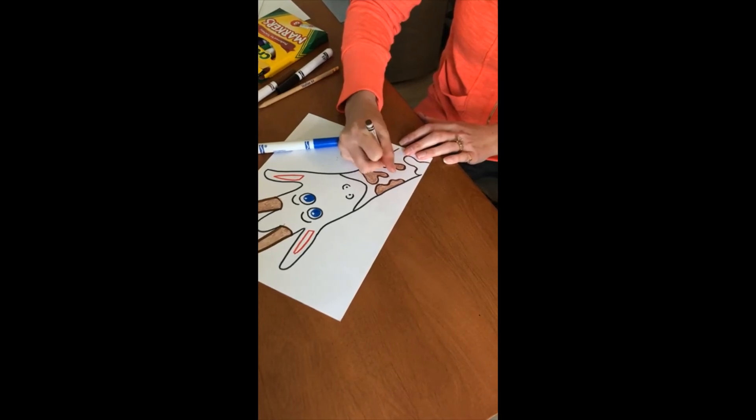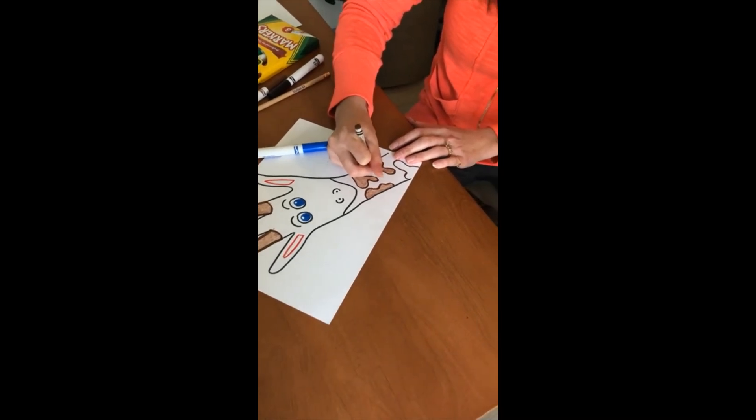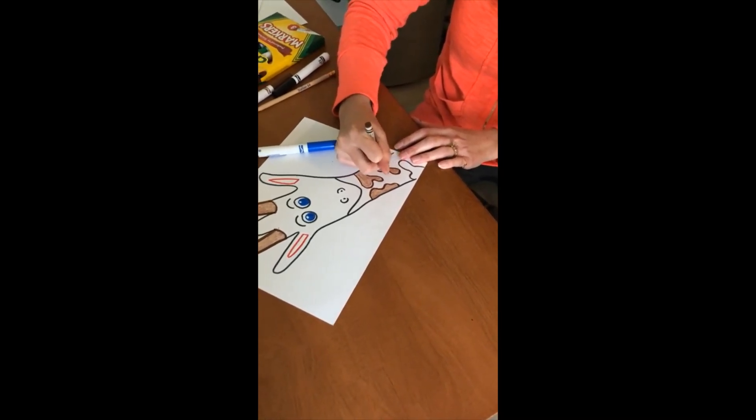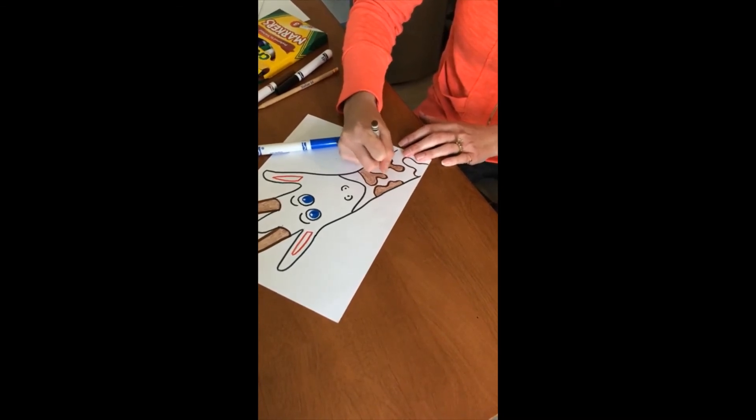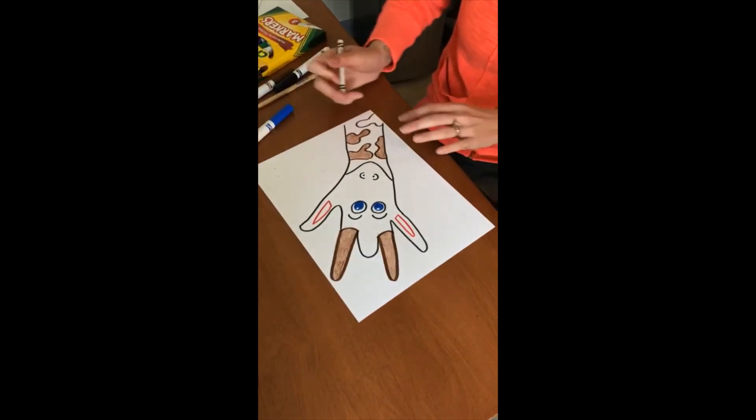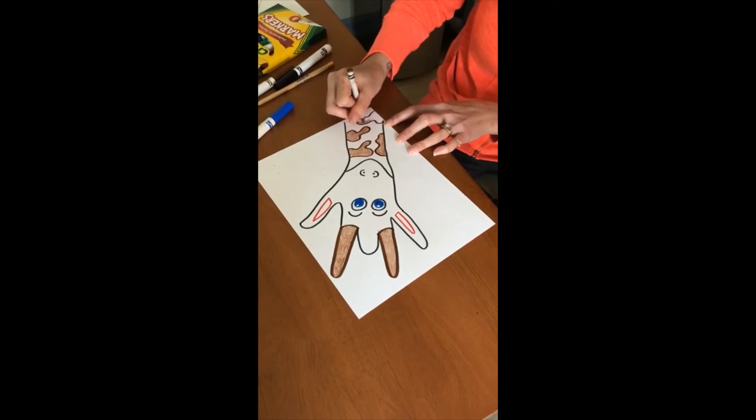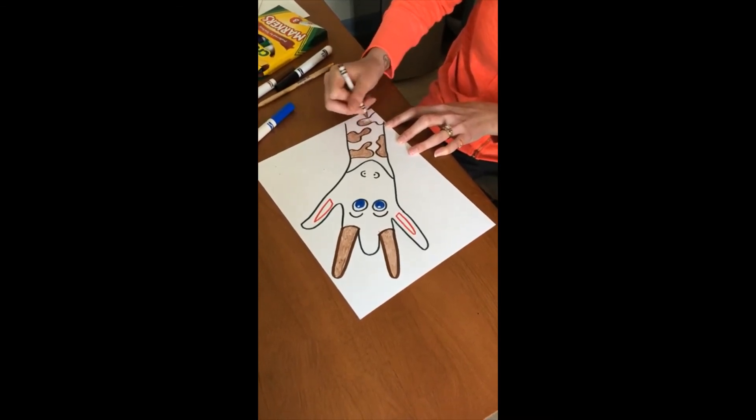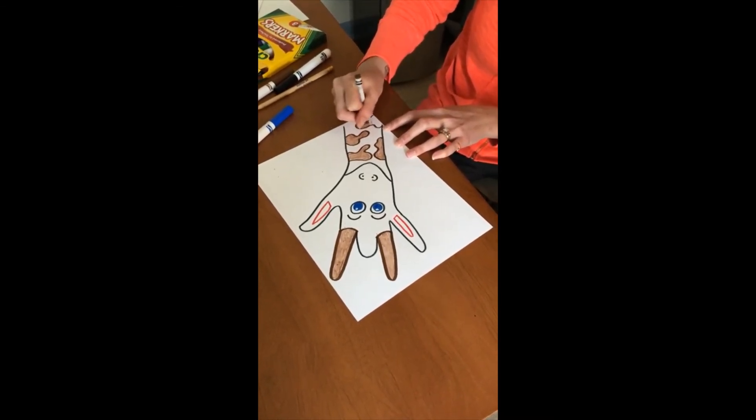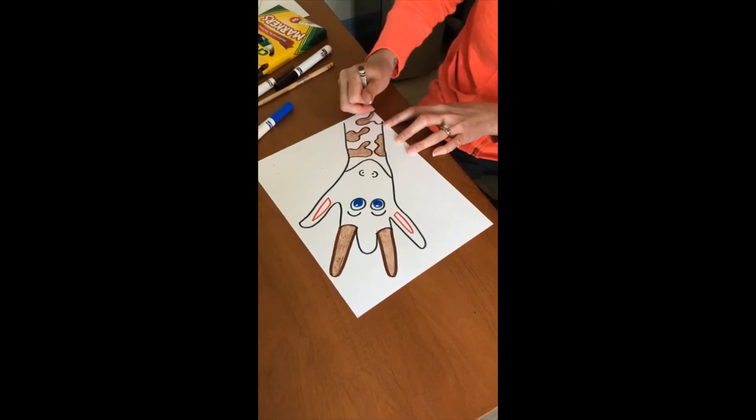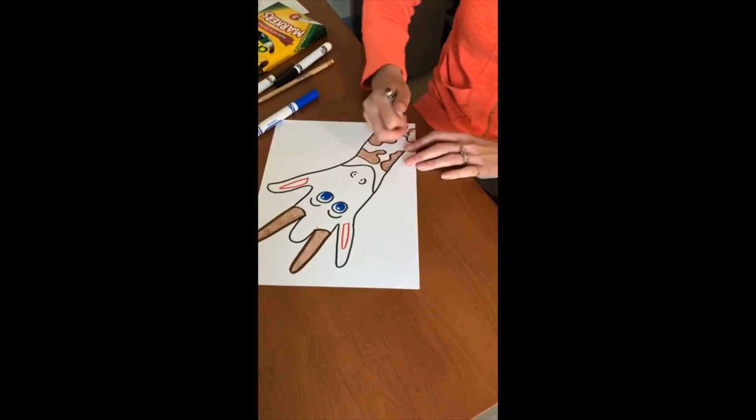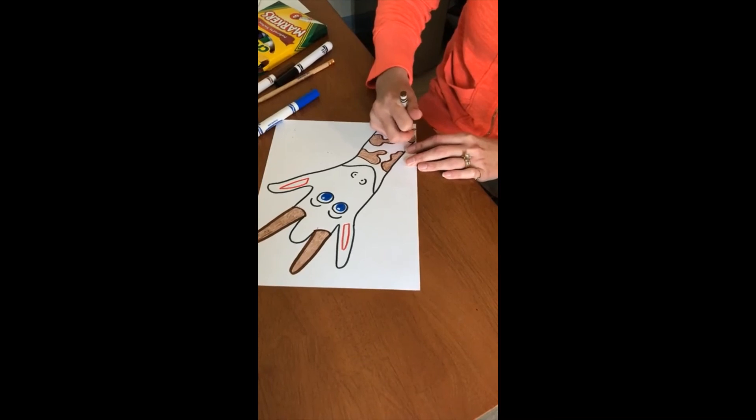When you're finished with your giraffe, I did not make a background. Maybe I'll make a background so we can post what the background would look like. But you could do leaves in the background, a sky, a fence like it's a giraffe in a zoo, trees, whatever you prefer. A sunset would look nice too, like a safari sunset.